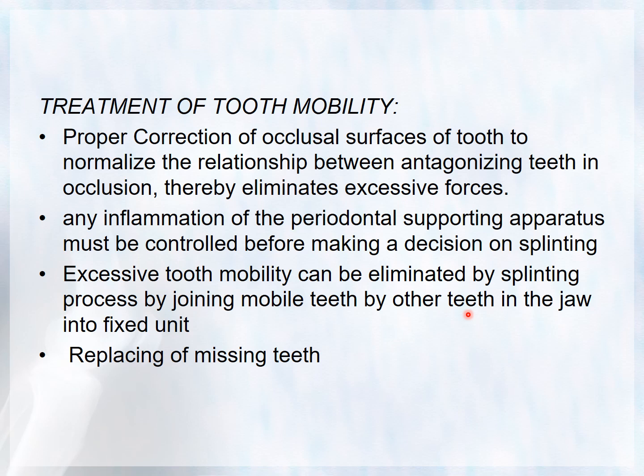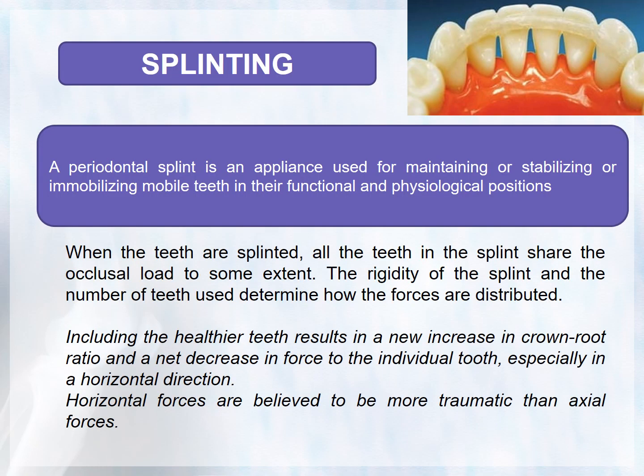After doing all these procedures, if there is still mobility, it can be stabilized by using splinting — joining mobile teeth to other teeth in the jaw into a fixed unit. If it cannot be splinted properly, then extraction and replacement of missing teeth is considered.